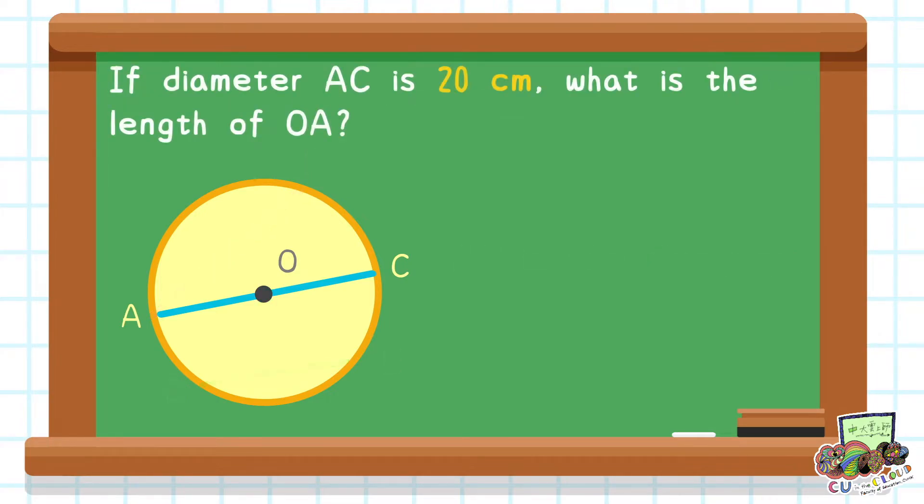If the diameter AC is 20 cm, what is the length of OA?